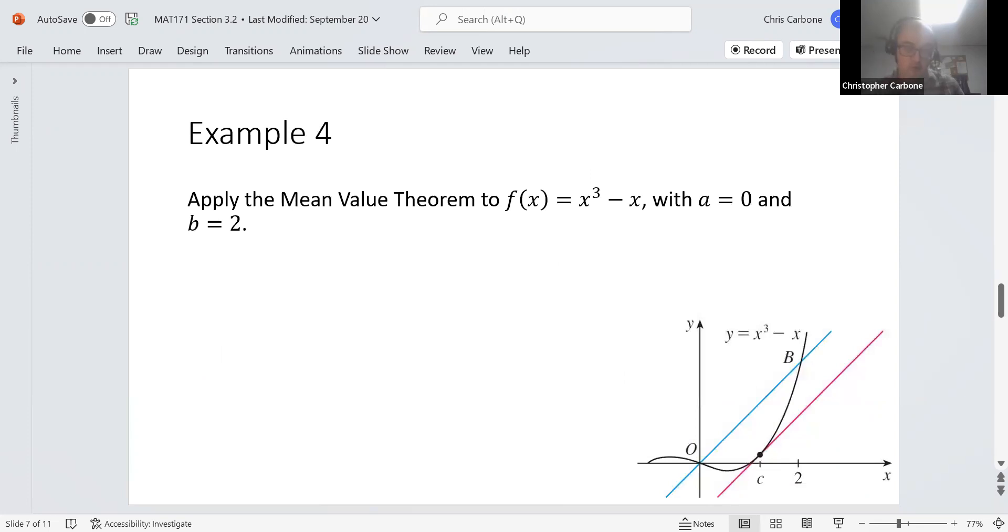For Example 4, we want to apply the Mean Value Theorem to f(x) = x³ - x with a = 0 and b = 2. You can see that in the graph in the right-hand corner. This is differentiable and continuous since this is a polynomial, which makes our life easier.